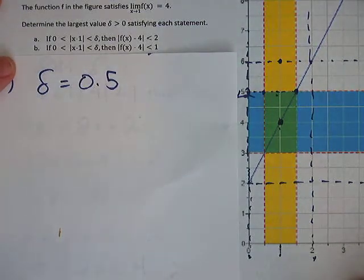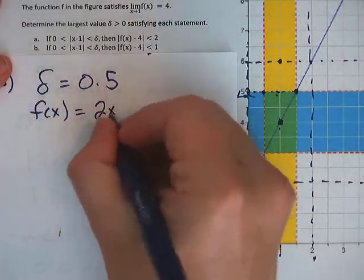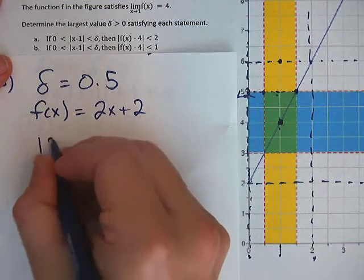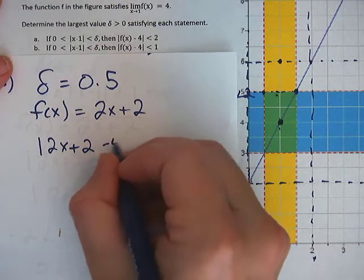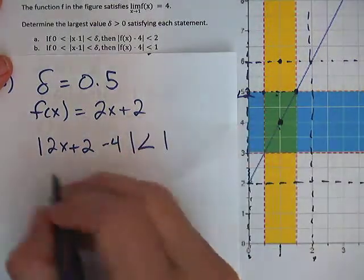We can confirm that real quick with the function. We've got our function already from earlier, 2x plus 2. So let's pop that in. So we have 2x plus 2 minus 4 is less than 1 this time.